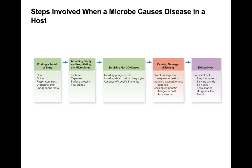Finally, the fifth stage of pathogenesis is exiting the host. That's largely the same ways you entered, except you would leave either respiratorily through salivary glands, skin, fecal matter, genital tract, or blood. There are many other ways to enter or exit as well — this is not a complete list.